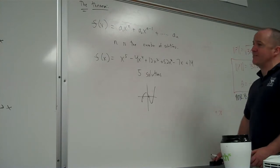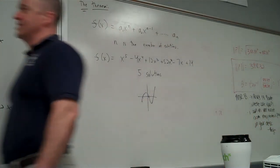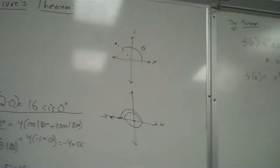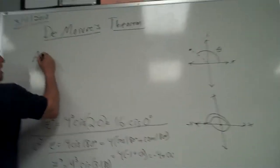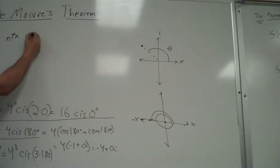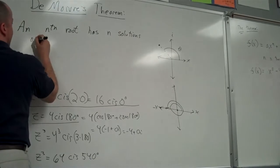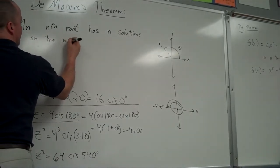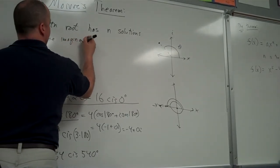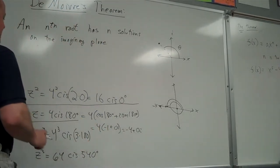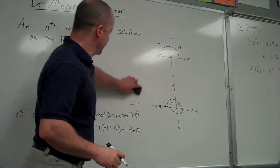De Moivre's theorem is a little bit like that, but for numbers. Here it is. The theorem is really short: an nth root has n solutions on the imaginary plane. An nth root has n solutions on the imaginary plane.